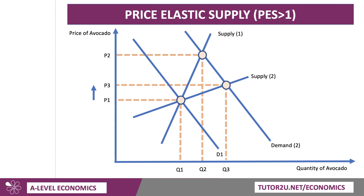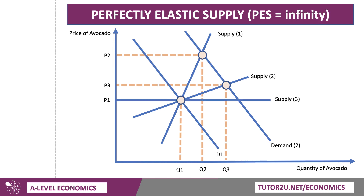It could be the case that growers can increase the supply onto the market without any increase in cost. This gives us supply curve S3 — perfectly elastic supply, where the coefficient is infinity. If there's an increase in demand, there's no change in price; we stick at price P1 and the quantity moves out to Q4, because producers and growers can simply meet the increase in demand by supplying more avocado onto the market.